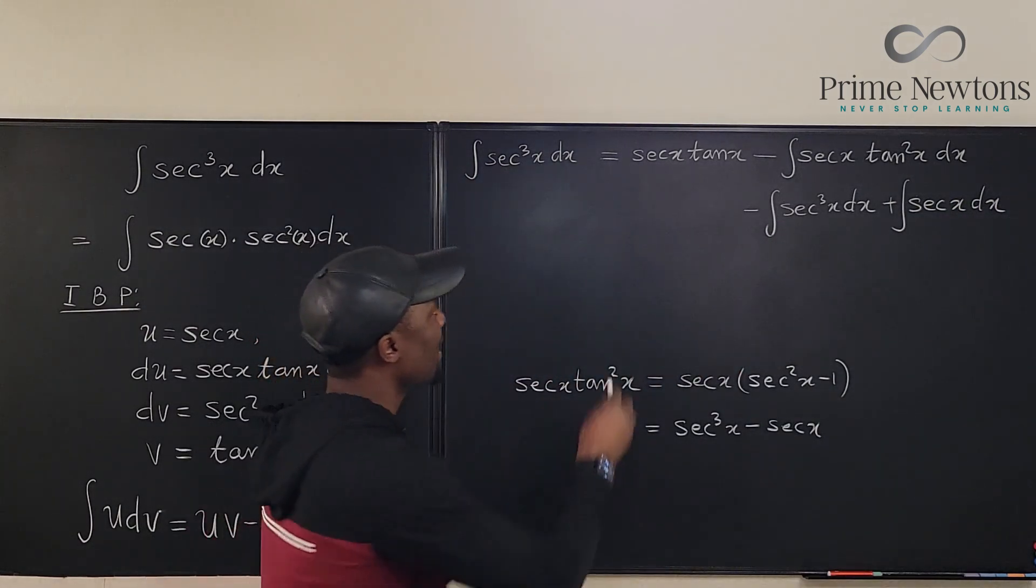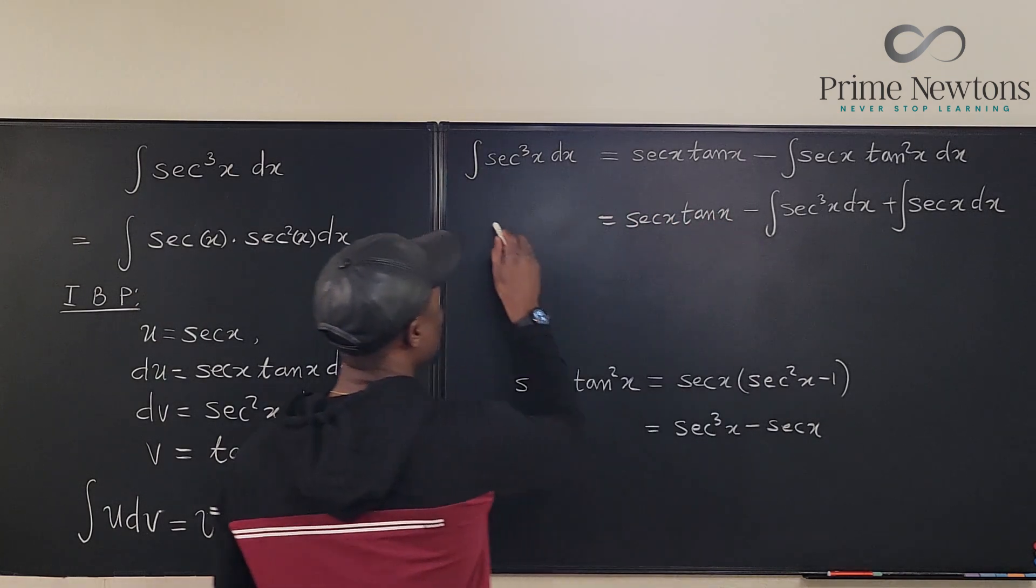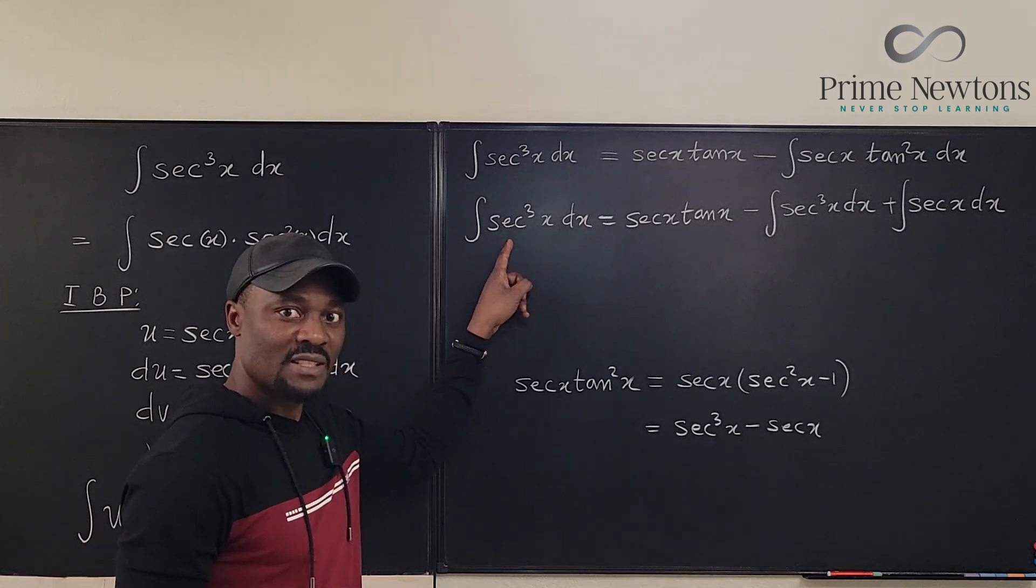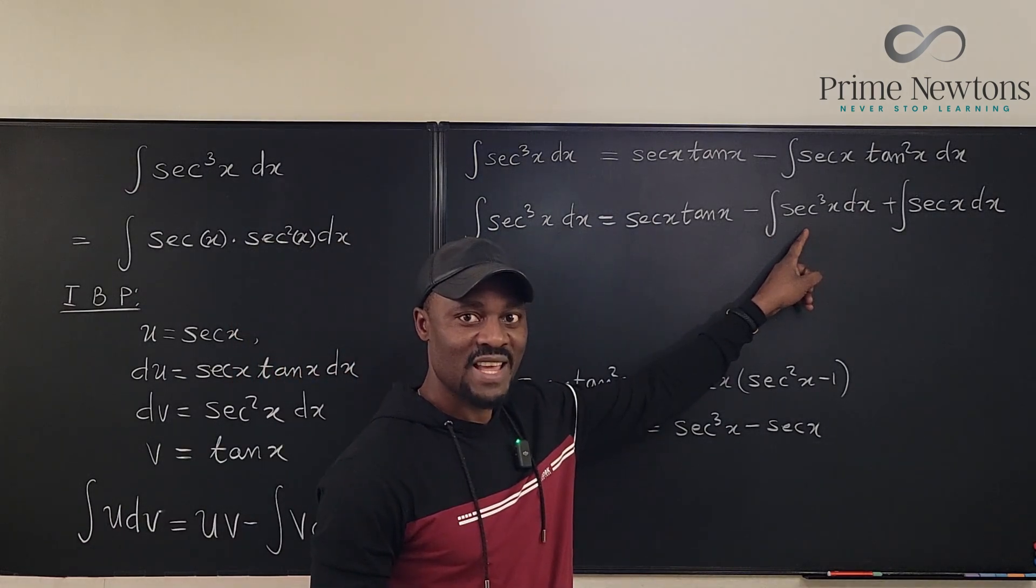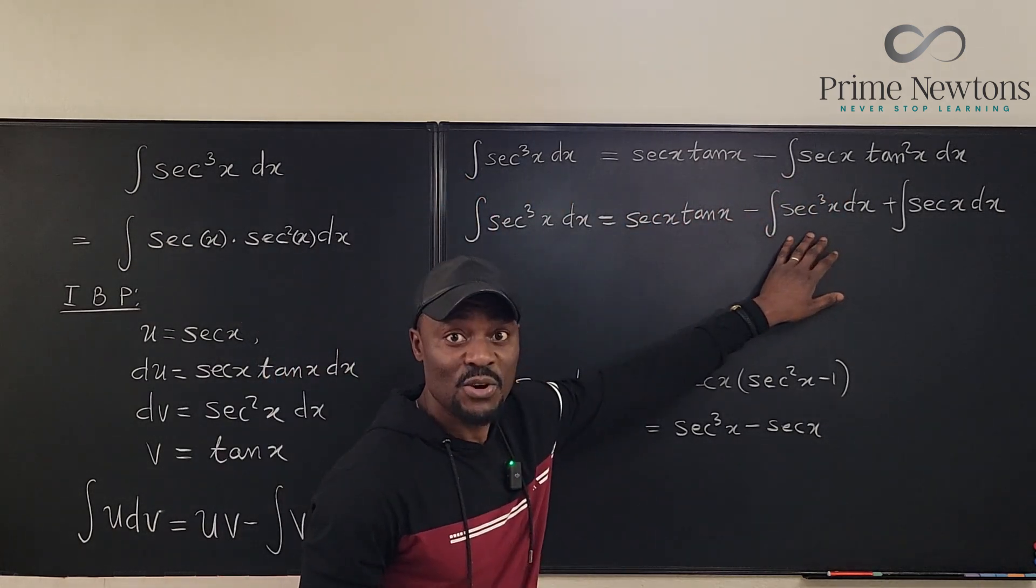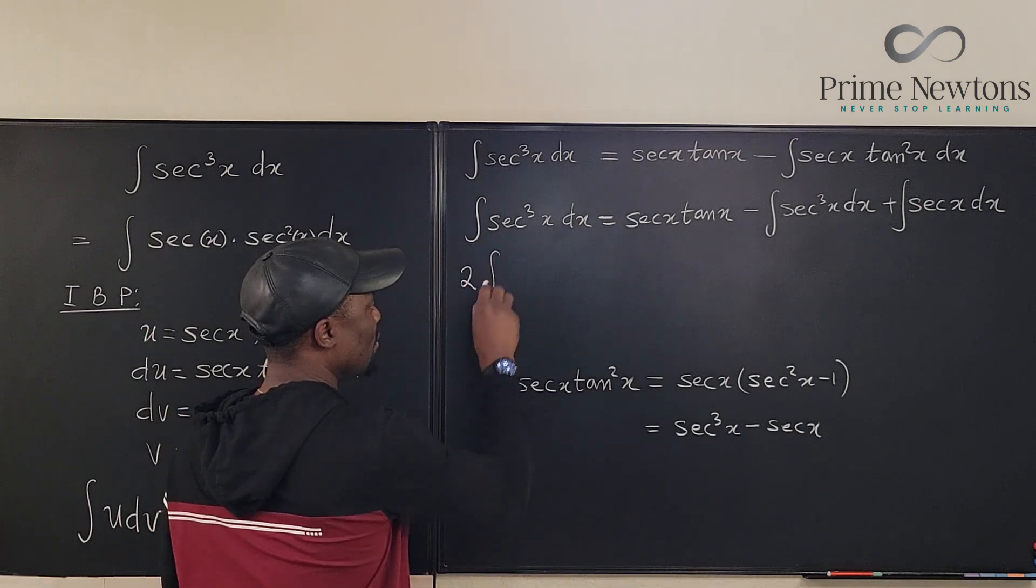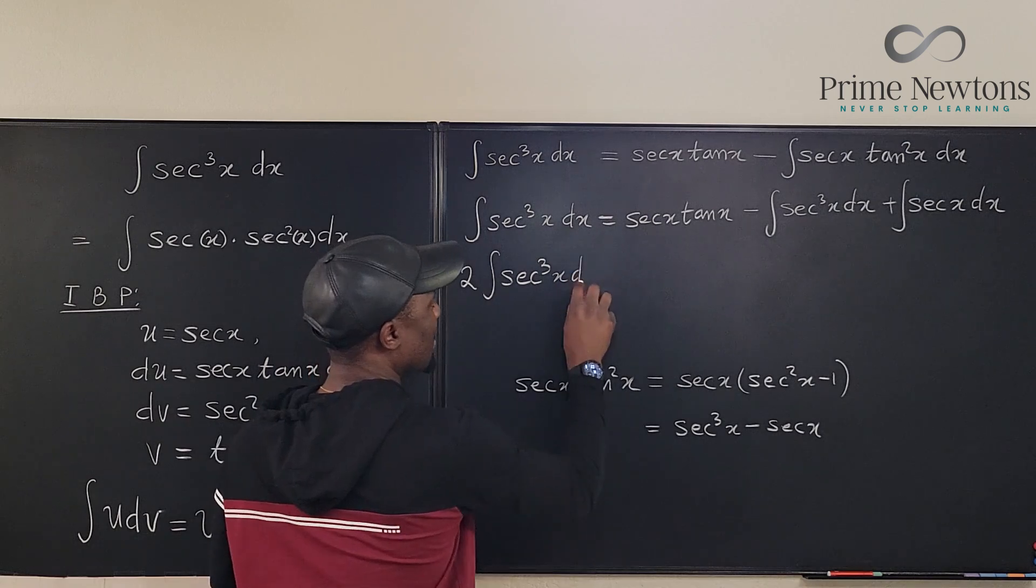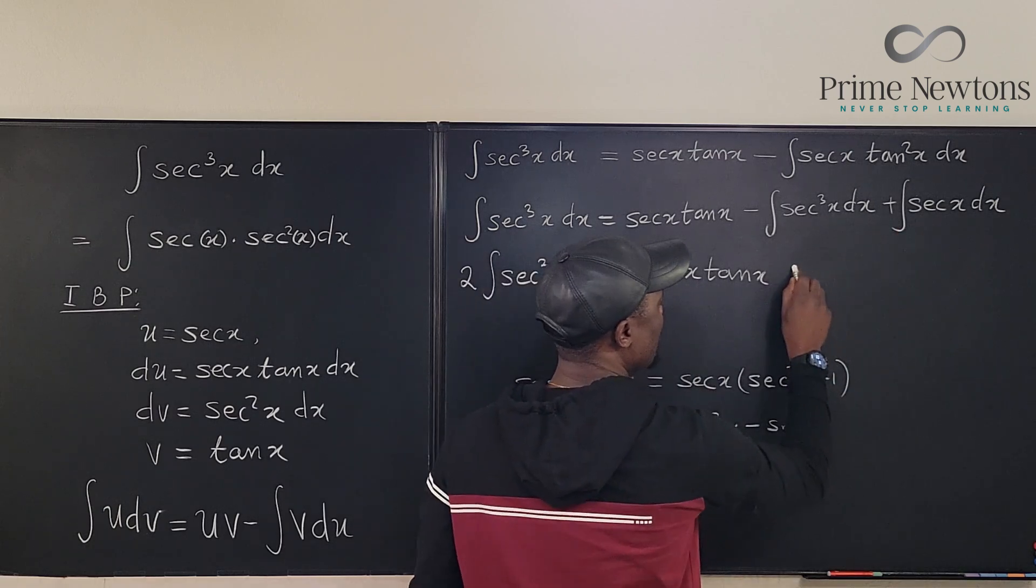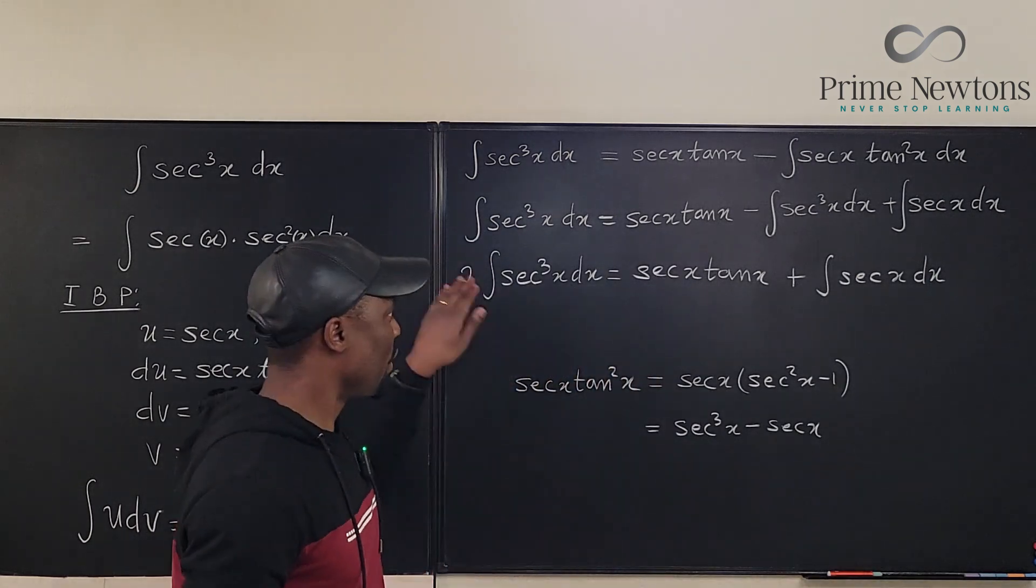So if you observe, this line is now secant x tan x. And this is the integral of secant cubed x dx. So you have secant cubed x dx here. You also have secant cubed x dx here. Take this guy, go add it to this, or just add secant integral of secant cubed x dx to both sides. You will notice that you now have two of them here. So we have two secant cubed x dx will now be equal to secant x tan x. And what you have here will be plus the integral of secant x dx.